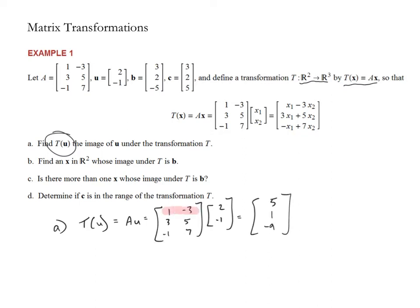And what do we get when we find that product? Let's see, I got 5, 1, negative 9. Remember, we multiply the row by the column and find that linear combination, 2 times 1 plus negative 3 times negative 1 is 5. So that vector, 5, 1, negative 9, is the image of the given vector U.